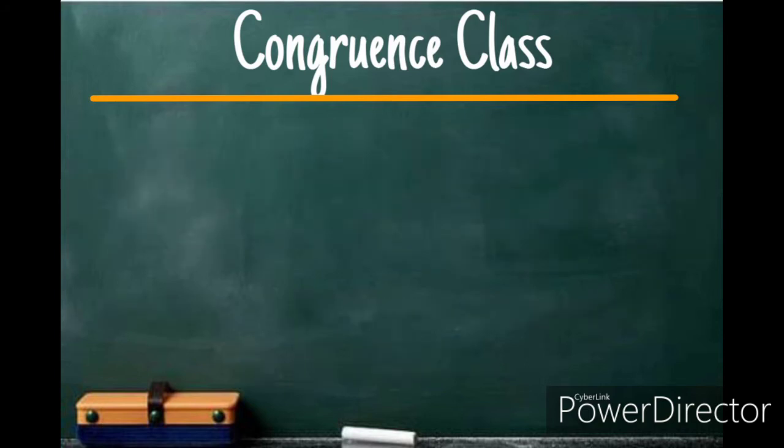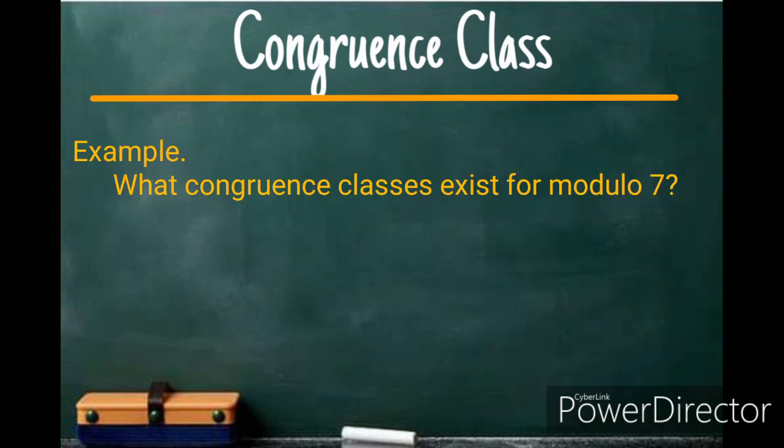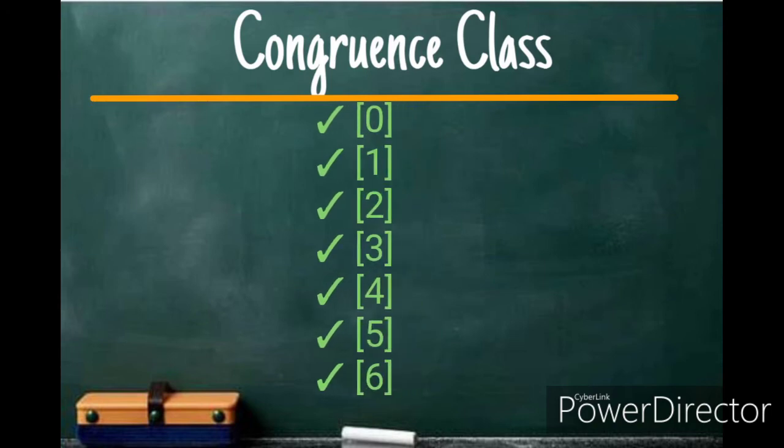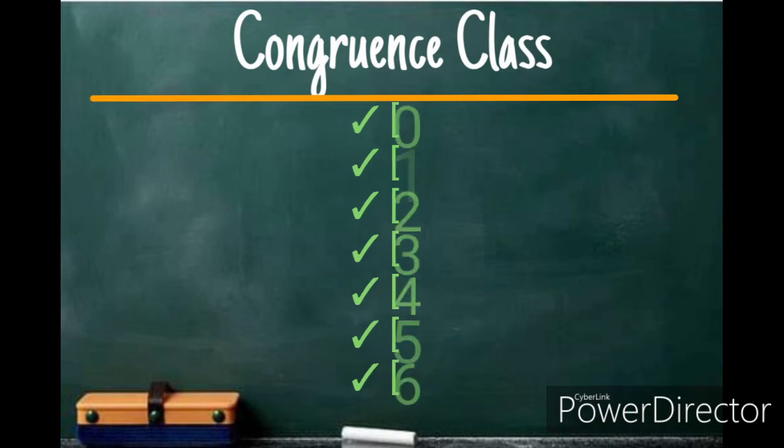How about for the congruence classes that exist for Modulo 7? So, the congruence classes that exist for Modulo 7 are 0, 1, 2, 3, 4, 5, and 6.